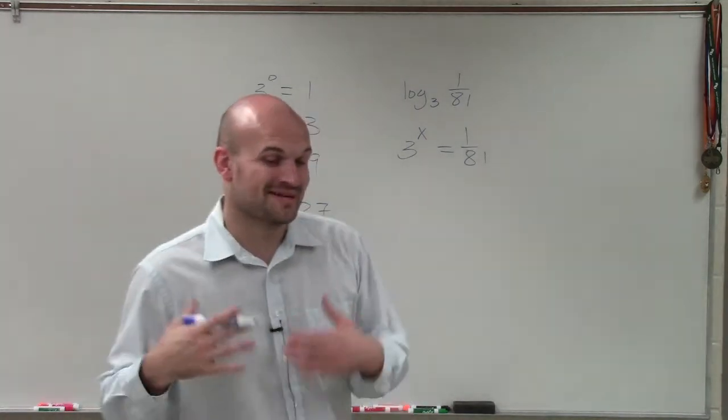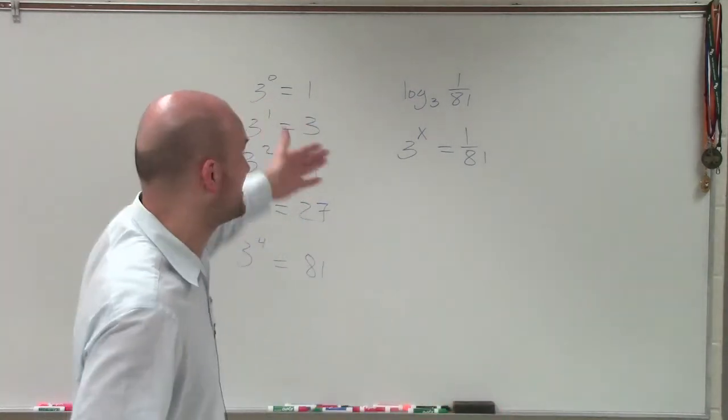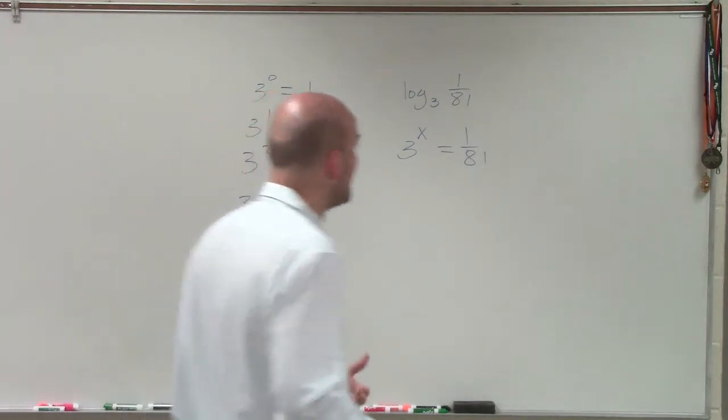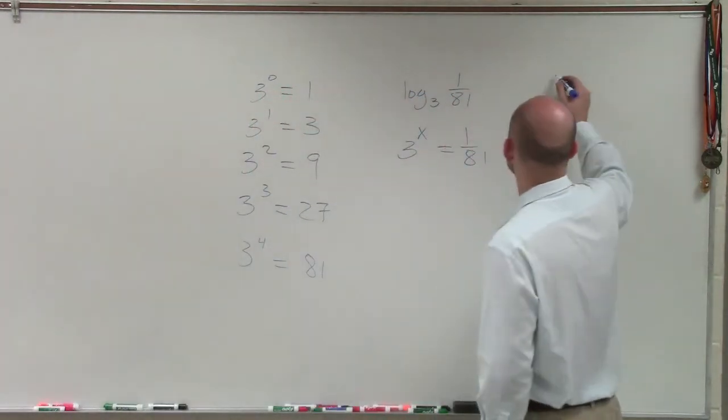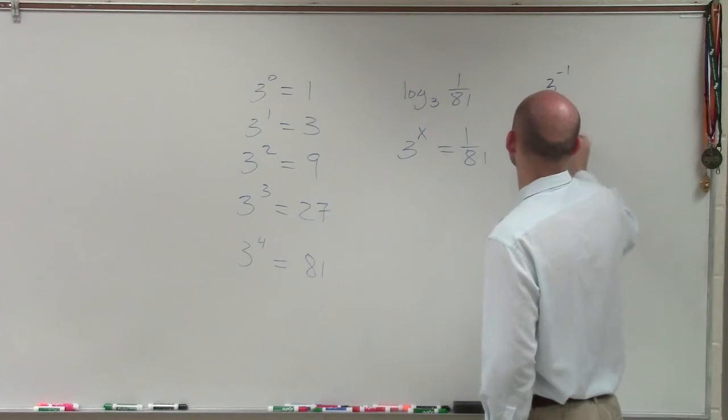However, you can see those numbers keep getting larger and larger, and I'm trying to get a number that's under 81, or under 1. So the next thing I can do is start looking at my negative numbers.